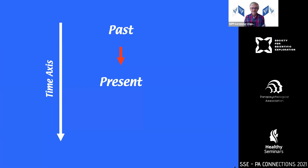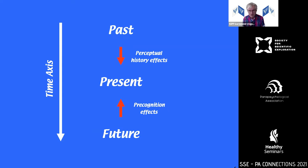Time plays a role for our endogenous constructs of reality, and our past experience has a strong influence on how we see the world at the current moment — I will label this perceptual history effects. However, precognition assumes that information from the future may also have an influence on how we see the world at the present moment.